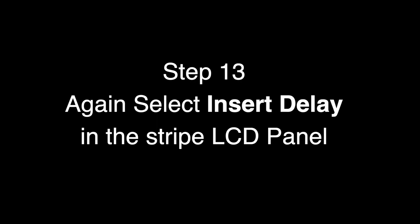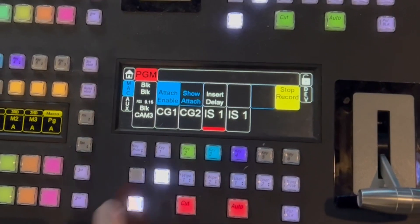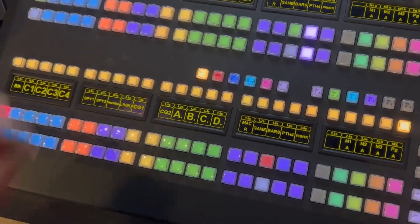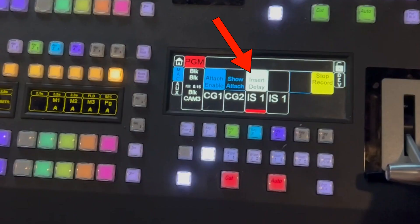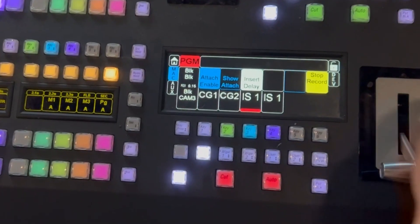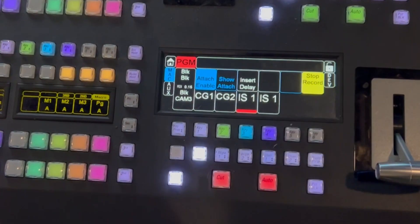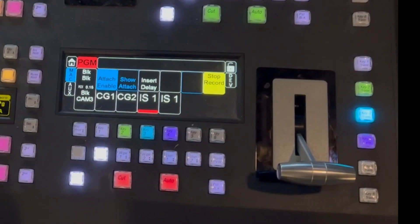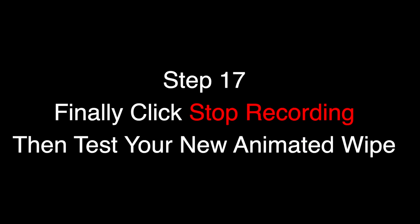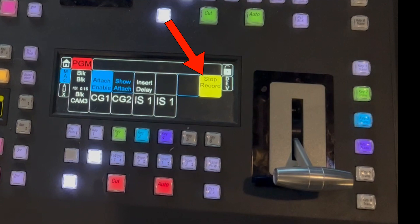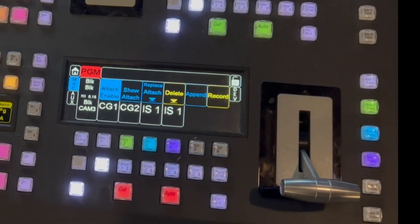Now click the Cut button to insert a cut. Once you have inserted a cut, click the Insert Delay button again — this time choose nine frames, then press Insert Delay again to exit the settings. Last but not least, remember to turn off your key, then click Stop Recording and test your new animated transition.